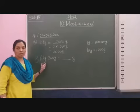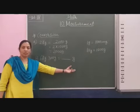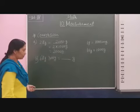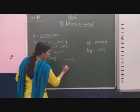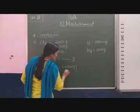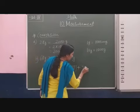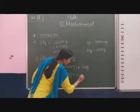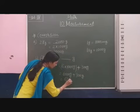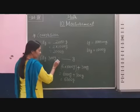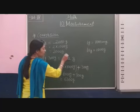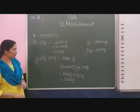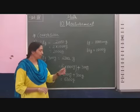Next, here both units are used — kilogram and gram — and we convert into grams. First, we convert kilograms into grams, then we add the grams. So six kilograms means six multiplied by one thousand grams, plus three hundred grams. The sum is six thousand three hundred grams, so six kilograms and three hundred grams is equal to 6300 grams.